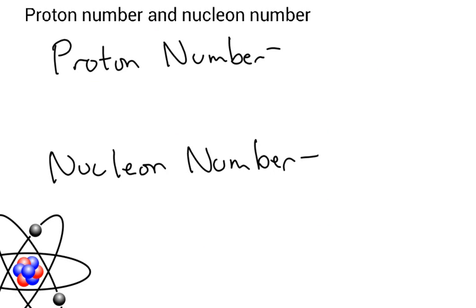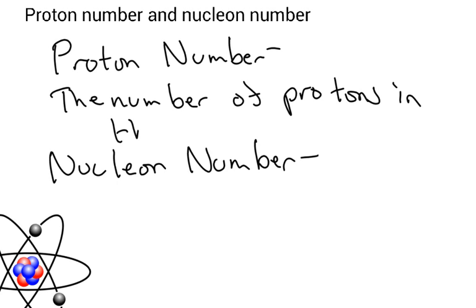You're also expected to know the proton number and the nucleon number. So the proton number is the number of protons in the nucleus, and the nucleon number is equal to the number of nucleons, that's protons and neutrons in the nucleus.